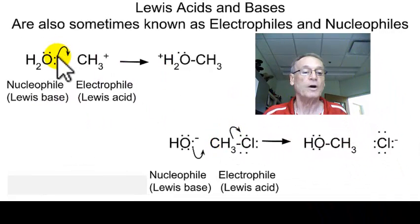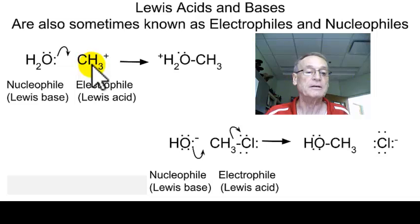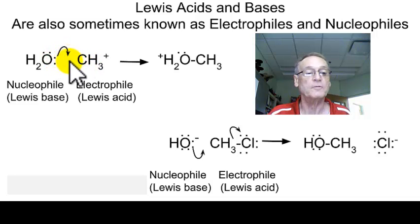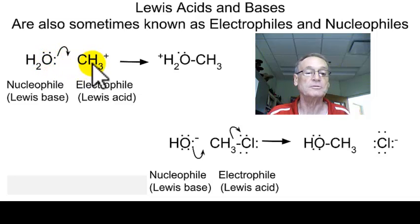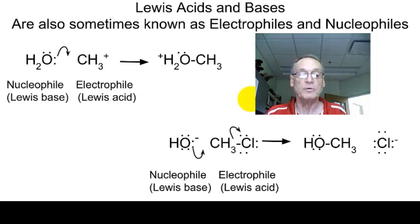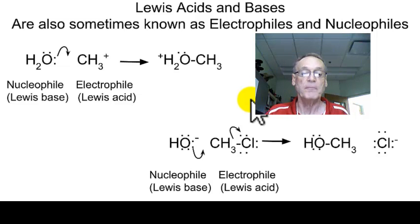Here are some more examples. Water attaching to a carbocation: this is clearly the nucleophile, this is the electrophile. The nucleophile wants to donate a pair of electrons in to form a new bond — that's also what we call a Lewis base. So this is your Lewis base, this is your Lewis acid, with a new bond in here. In this example over here, the hydroxide, the OH⁻, is the nucleophile. It wants to donate its pair of electrons — it's a Lewis base — and the methyl chloride, in this case, is the electrophile.